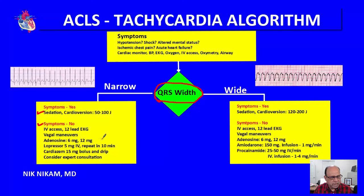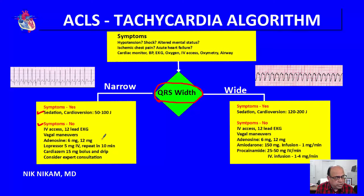If the patient has no symptoms, we have time to get IV access, analyze the 12-lead ECG, and follow vagal maneuvers to slow the heart rate and identify the underlying atrial rhythm — whether it is atrial fibrillation, atrial flutter, paroxysmal atrial tachycardia, or junctional tachycardia. If it is a regular supraventricular tachycardia, adenosine 6 mg IV bolus followed by a saline flush is most often effective.